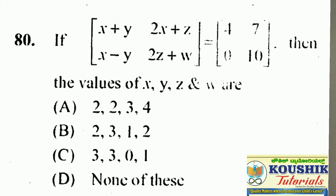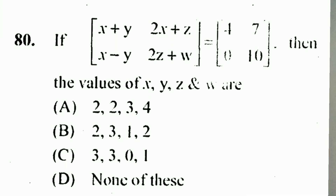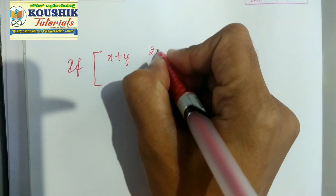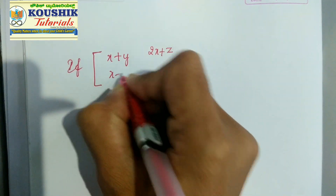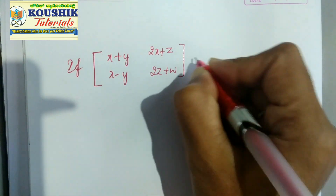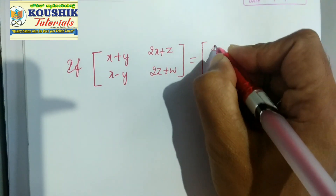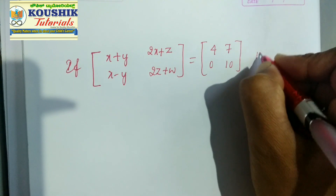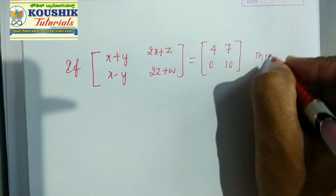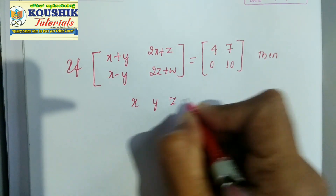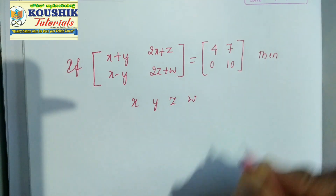So, first let me write the question. If the matrix [x+y, 2x+z; x−y, 2z+w] is equal to [4, 7; 0, 10], then we want to find out what are the values of x, y, z, and w respectively.